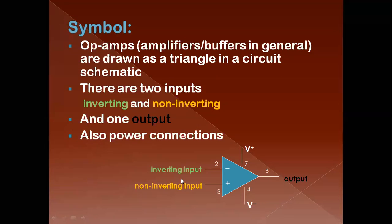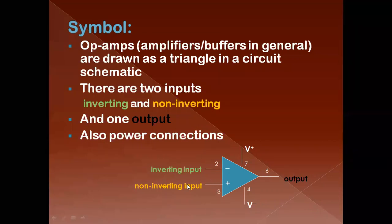The second terminal represents the inverting input. Whenever we apply some input to the inverting terminal, the output is 180 degrees out of phase with the input — meaning we get a negative sign at the output. If we apply input to the non-inverting input terminal, the third terminal, the output is in phase with the input — meaning we get a positive sign at the output.